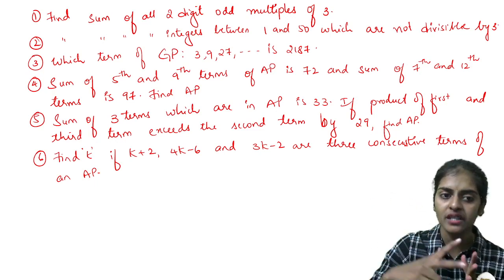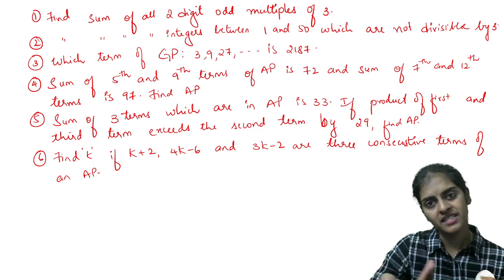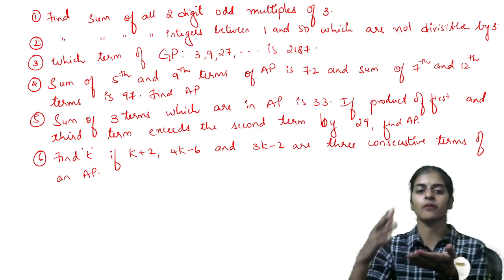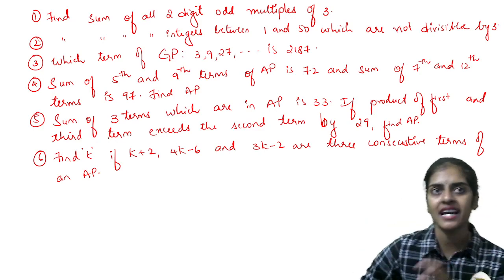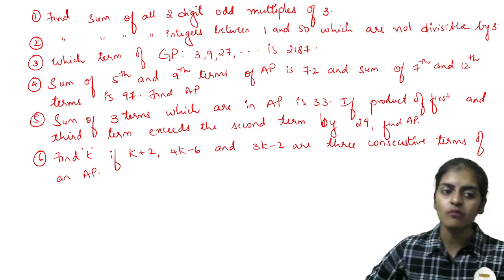Similarly, seventh and twelfth term is 97. Two equations you get in terms of a and d. Solving those two equations, you get a value and d value. To find the AP: it's a, a plus d, a plus 2d, and so on. Substituting the values of a and d, you get your AP.